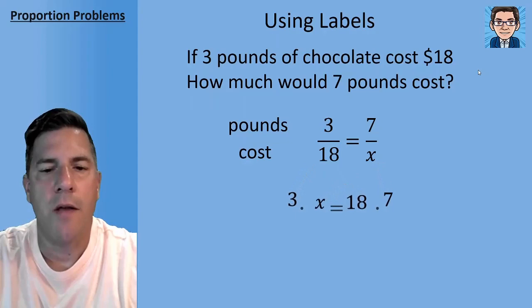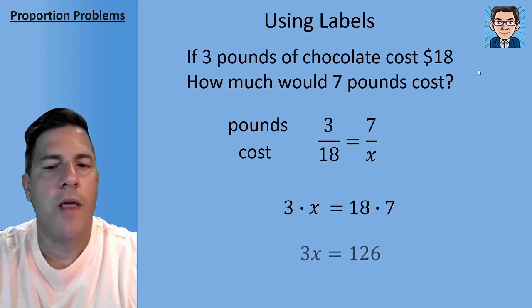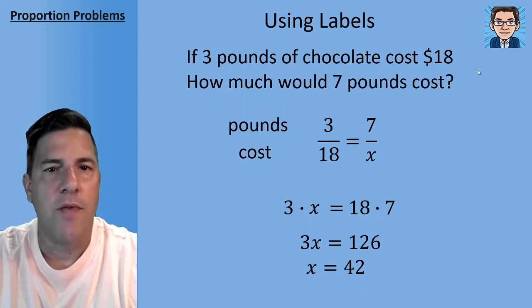Then from there we can just cross multiply, 3 times x equals 18 times 7. So we get 3x equals 126, divide by 3 to get our final answer, and that's going to be 42.